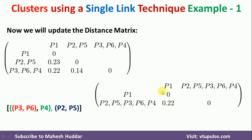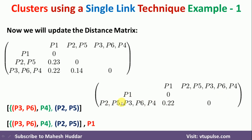From the resulting matrix, there is only one minimum value remaining: 0.22. We merge P1 with the existing cluster. You might ask why we don't consider the diagonal zeros — if we did, all values would be minimum, so we must exclude them. The final clusters result from merging: first P3 and P6, then P4, then P2 and P5 separately, then those two groups merged, and finally P1 was merged into the entire cluster.